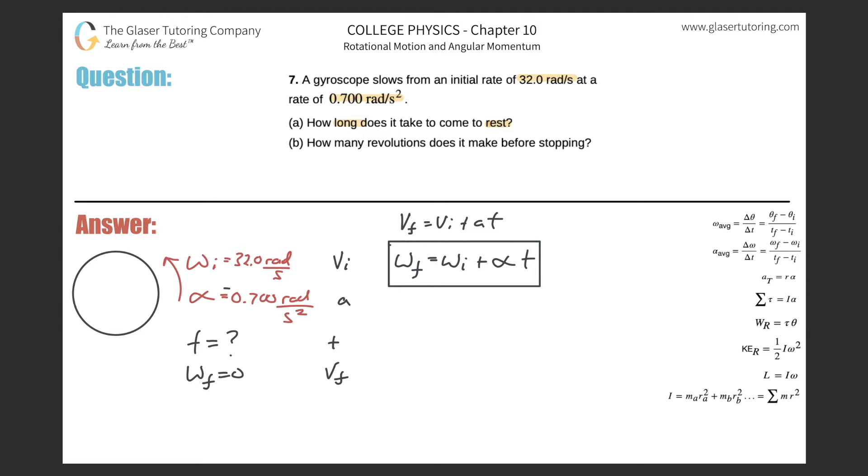So now we are asked to solve for time. So just solve this thing for time. So it looks like we're going to have final angular velocity minus the initial all over the angular acceleration. Just now plug in the values. So we have zero minus 32 all over negative 0.7, and if you notice the signs work out nicely, the time will be positive. It has to be.